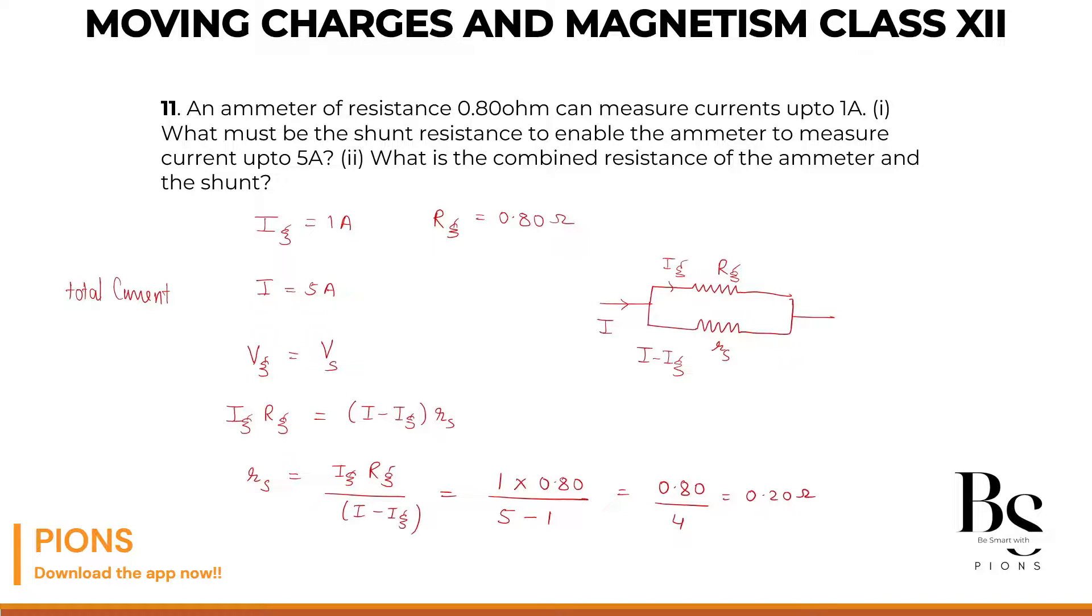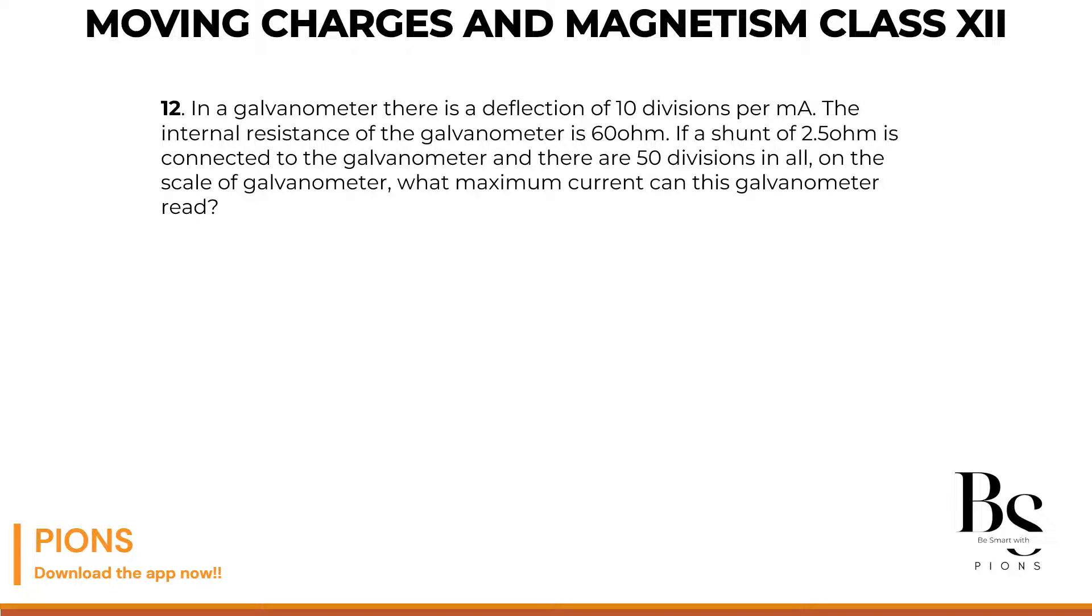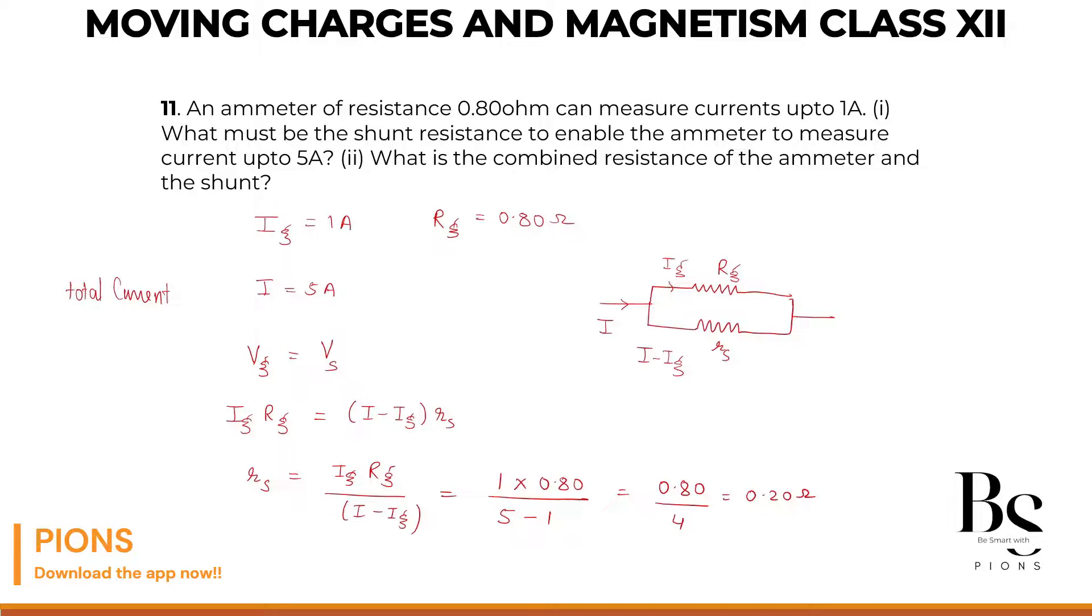Now if RS is 0.20, we can find the second part. What is the combined resistance of the ammeter and the shunt? So 1 by R equivalent equals 1 by RG, which is the resistance of the galvanometer, plus 1 by 0.20, which is 0.2. Let's make it simple. Many students are confused with these fractions. Make it 10 upon 8, and 10 upon 2.